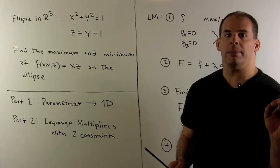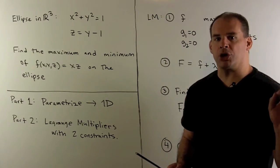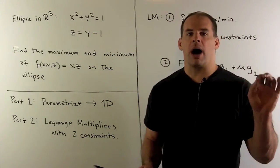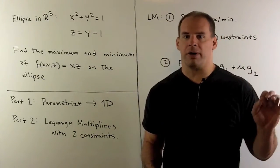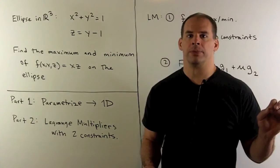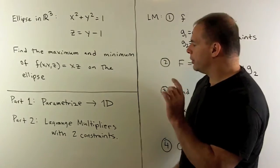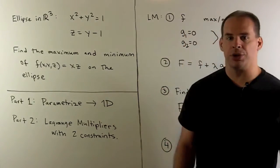In Part 1, we solved the problem by parametrizing the ellipse. We were able to turn our problem into a problem of single variable calculus. In this video, I want to solve the problem using Lagrange multipliers with two constraints.